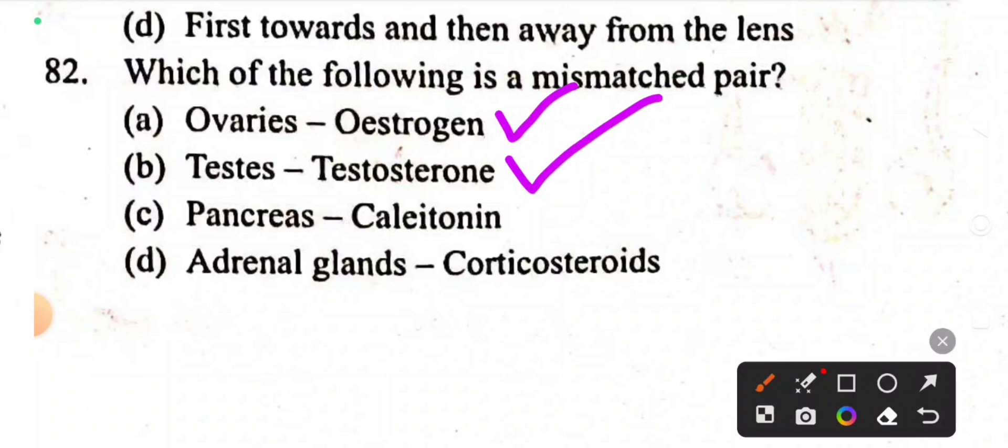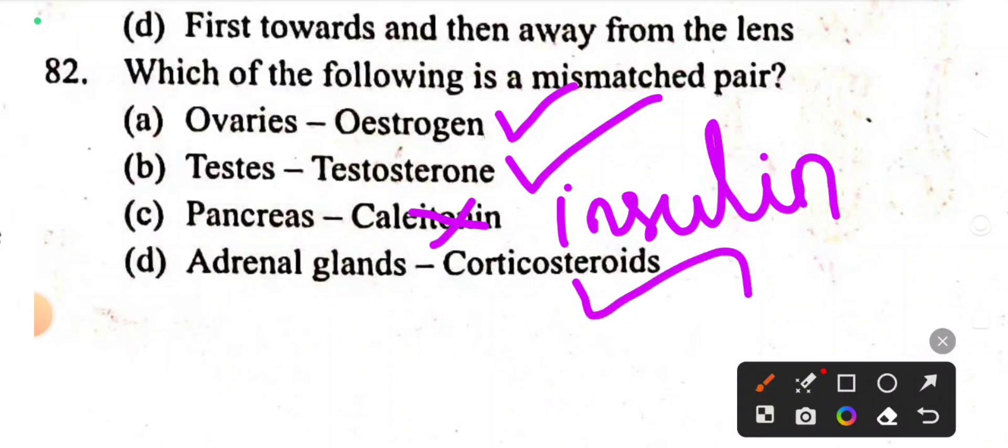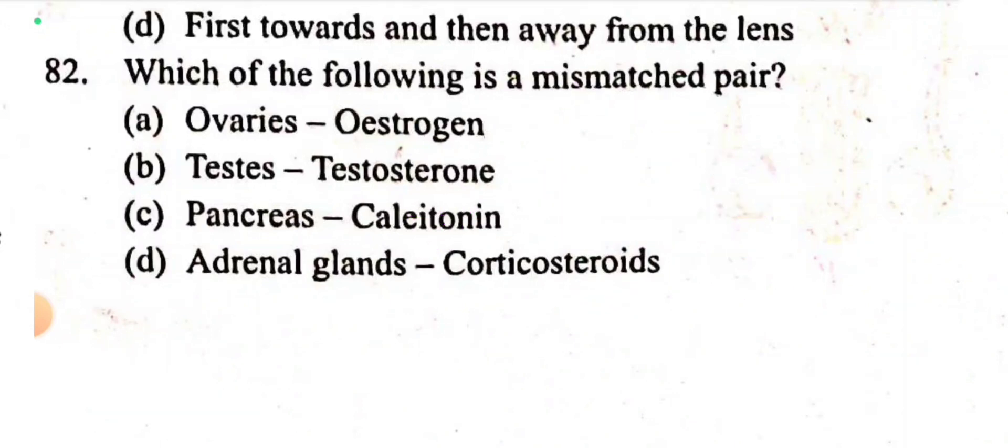Pancreas secretes insulin. No, this is wrong. Adrenal glands-corticosteroids, correct. So the mismatched pair is pancreas-melatonin.